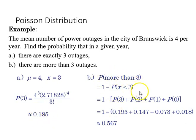For it to be more than 3, we subtract 1 minus the probability that X is less than or equal to 3, which is a factorial. If you work that out, you get 0.567.